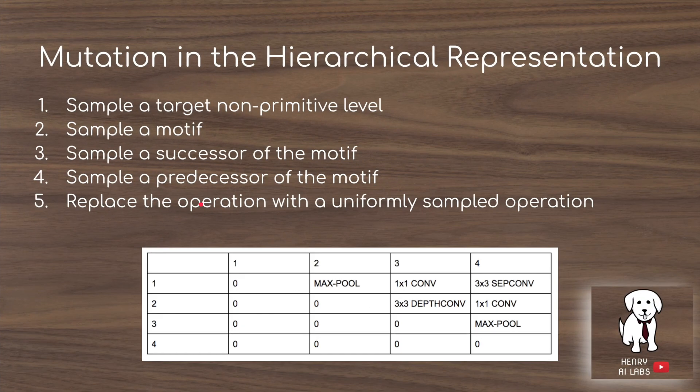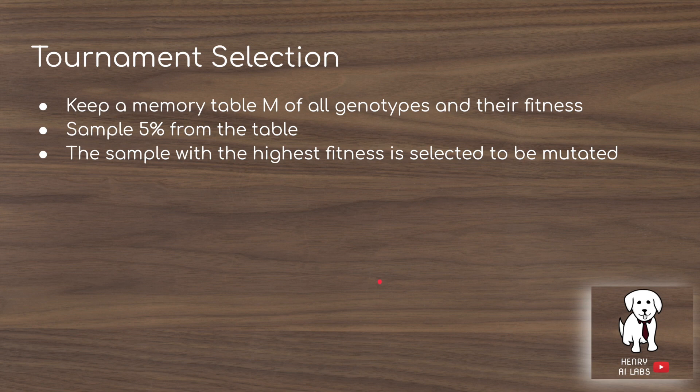Mutation in the hierarchical representation is done by first selecting a level such as two or three, then sampling a motif from that level, sampling a successor and predecessor node, and replacing the operation — for example, taking a max pooling and replacing it with a 3x3 convolution. For selection, they use a tournament selection algorithm, keeping a memory table of all genotypes and their evaluated fitness, sampling 5% of members from the table, and selecting the one with the highest fitness to be mutated.